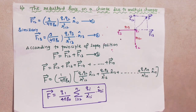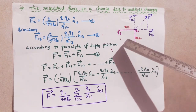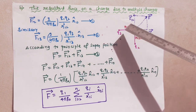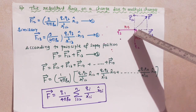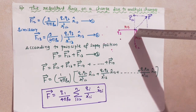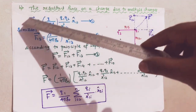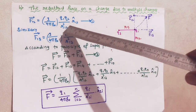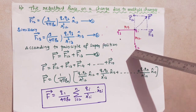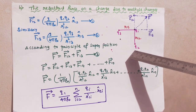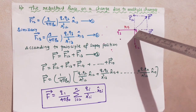In this class we have to find the resultant force on a charge due to multiple charges. Consider three point charges q1, q2, and q3. The force on q1 due to q2 is given by this equation — the vector form of Coulomb's law. It states that the force between two point charges is directly proportional to the magnitude of the charges and inversely proportional to the square of the distance between them.